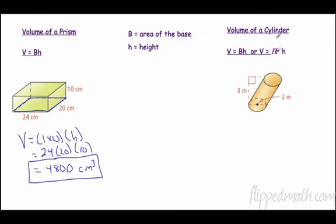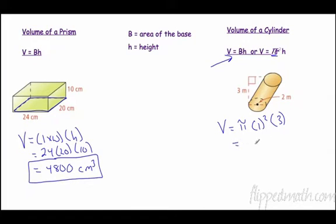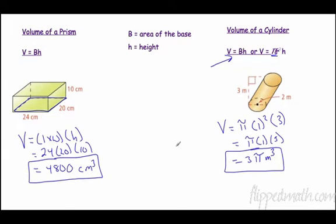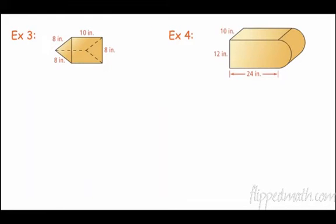The volume of a cylinder uses the exact same formula. The only difference is the base is a circle, so we apply pi r squared times h. This example is an oblique cylinder, but that doesn't matter. The radius is 1 since the diameter is 2, so it's pi times 1 squared times 3, which equals 3pi cubic meters. That's the exact answer; plug it in for an approximation.